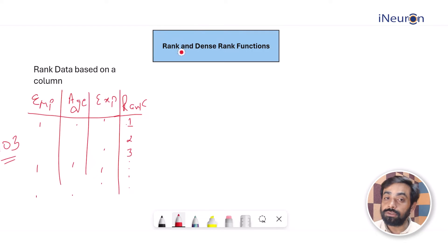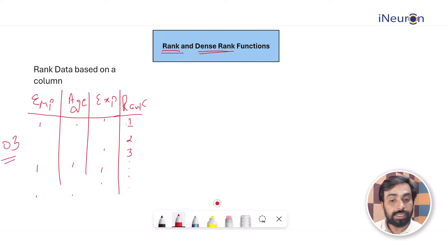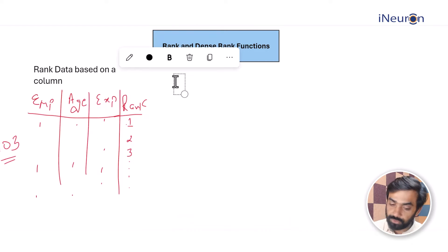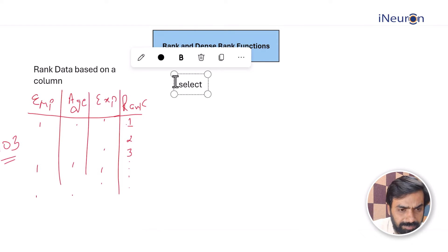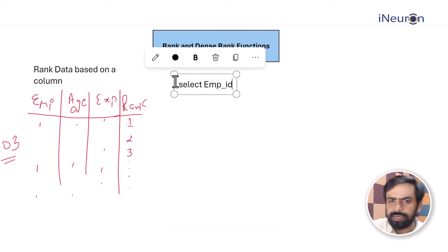We use two functions: one is called RANK and the other is called DENSE_RANK. There is a minor difference between them. Let's look at the syntax of RANK first. We SELECT the column names — say employee ID, age, experience — and then a fourth column.